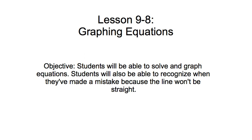This is a lesson on graphing equations. Our objective today is for you, the students, to be able to solve and graph equations. You'll also be able to recognize when you've made a mistake, because the goal of this lesson is to make a straight line on a graph. If you make some other kind of line — a line with an elbow in it — it won't be straight, and something has gone wrong if your line is not straight. This lesson has several steps in it.